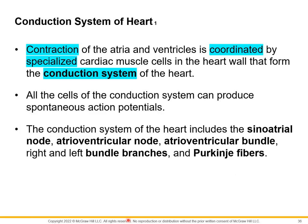The conduction of the atria and ventricles is controlled by specialized cardiac muscle cells in the heart wall that form a conduction system. The conduction system is composed of the sinoatrial node, the atrioventricular node, the atrioventricular bundle, the right and left bundle branches, and the Purkinje fibers. Together these nodes, bundles, and fibers keep the heart in coordinated motion.